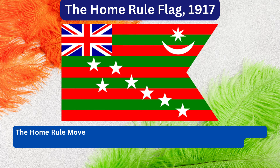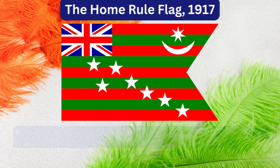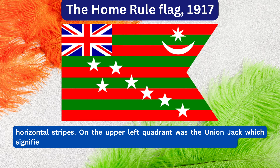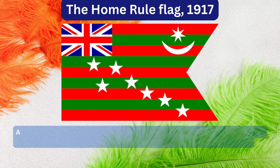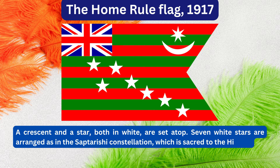The Home Rule movement formed by Bal Gangadhar Tilak and Annie Besant in 1917 adopted a new flag, one which featured five red and four green horizontal stripes. On the upper left quadrant was a Union Jack, which signified the dominion status that the movement sought to achieve. A crescent and a star, both in white, are set in the top fly, and seven white stars are arranged as in the Saptarishi constellation, which is sacred to the Hindus.